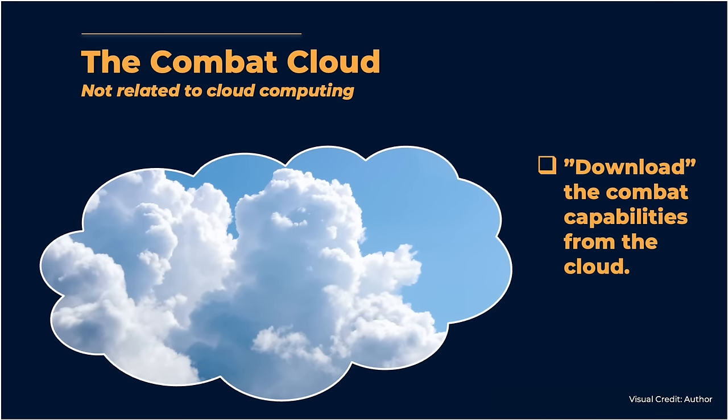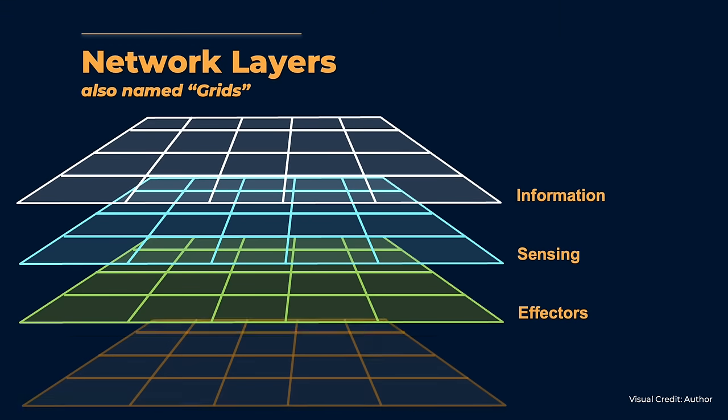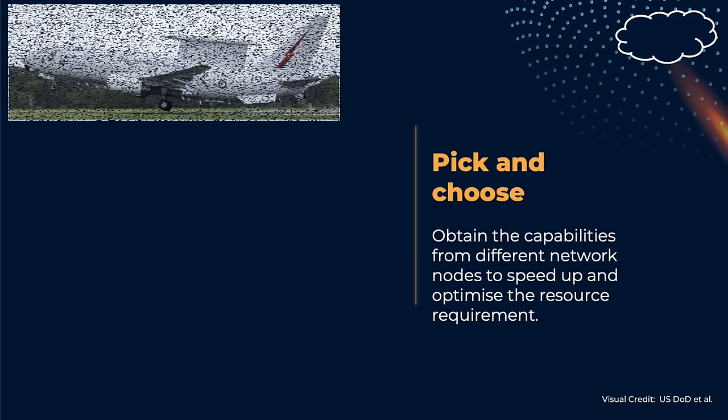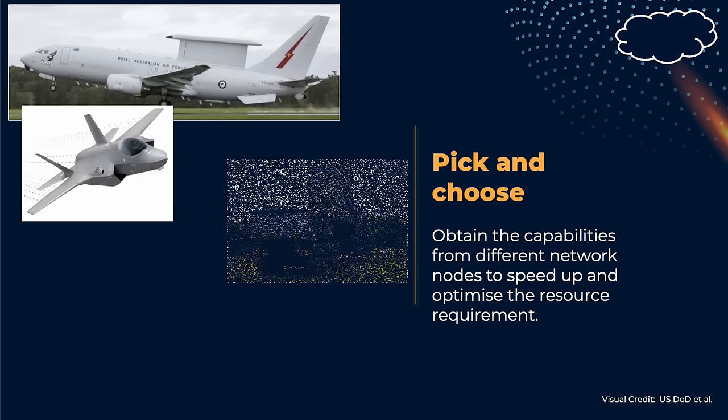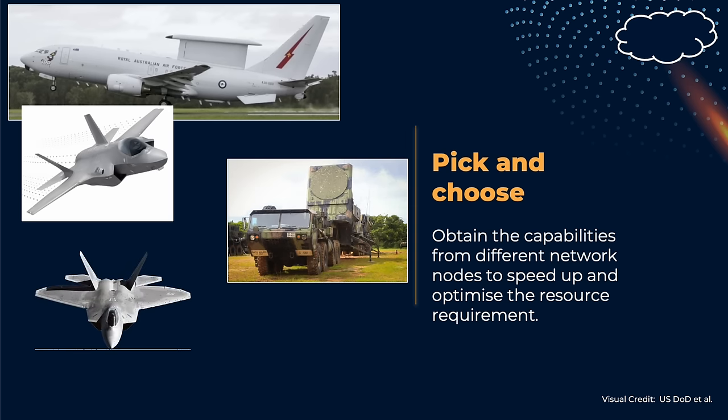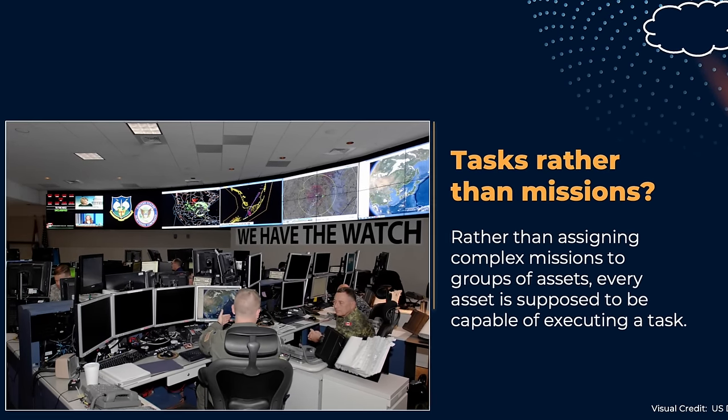Together with the network there is the concept of the combat cloud — like cloud computing, but with weapons. The combat cloud is an operational concept: whatever capability you need to engage a target, you may download it from the combat cloud as needed. The cloud is the combination of all elements connected in the network that can be used as seen fit by commanders. For example, an air defense commander may draw intelligence from an AWACS, target identification from a fighter, targeting from a ground-based radar, a missile effector from a different fighter, and guidance from a drone.